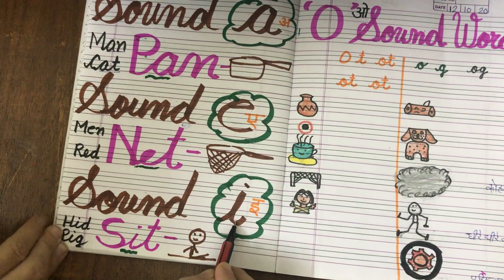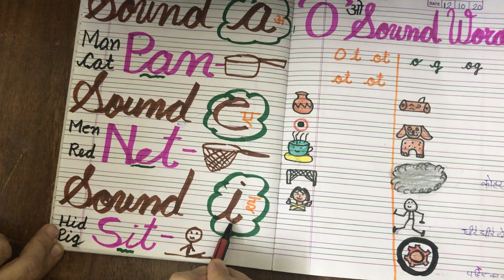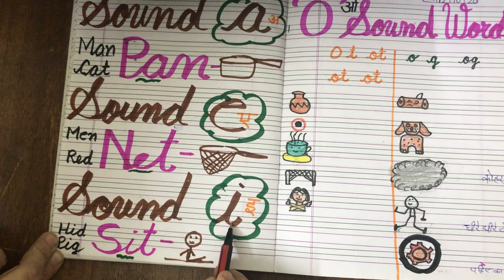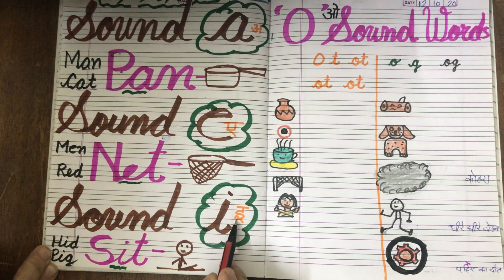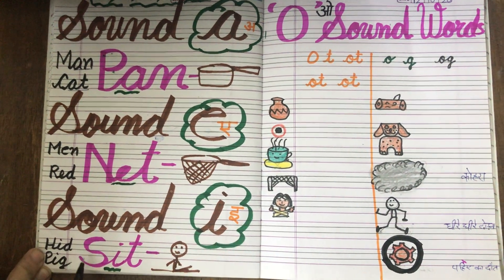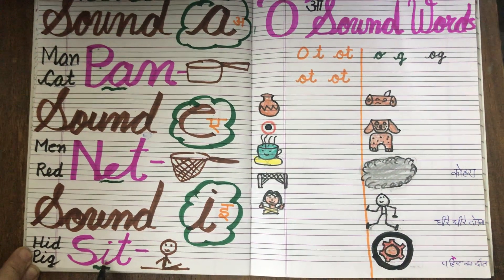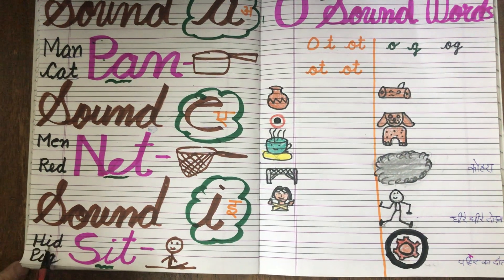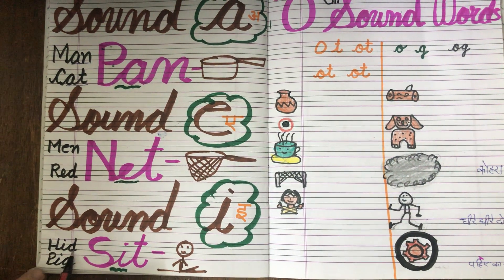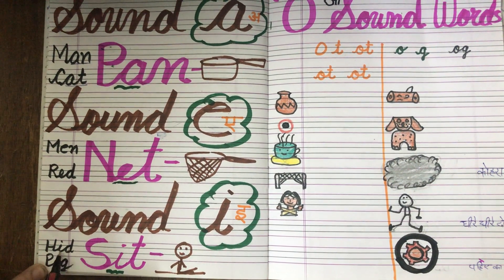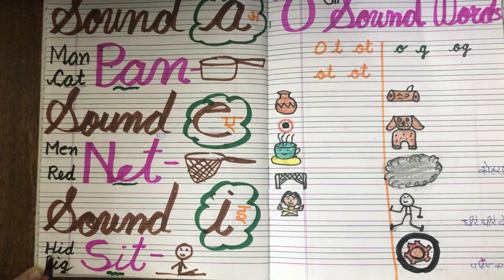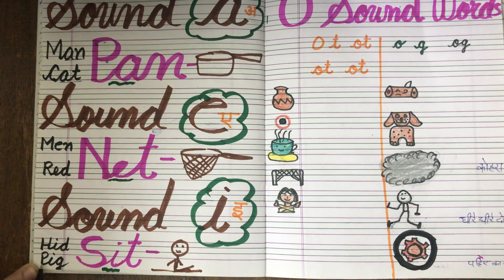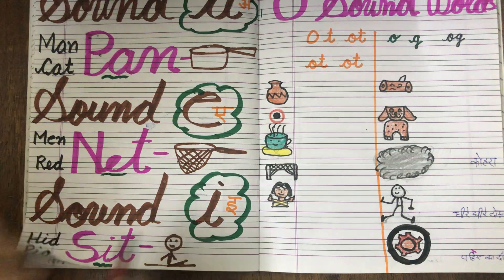Sound of I. Sound of I ke words kiye thai na haam nye. So sound of I — I ki sound kya hoti hai? E. Sa, it, sit. Ha, it. Last ki two letters hikatthe badao gya haam. Ha, it, id. Pa, id, pig.